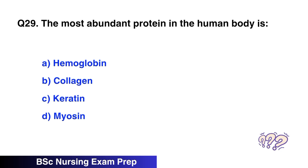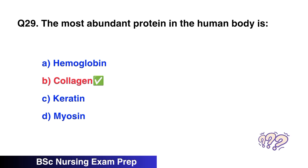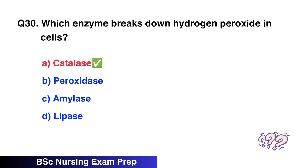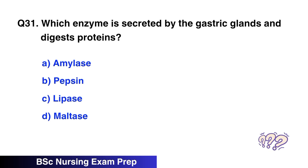Question 29. The most abundant protein in the human body is? The correct option is B, collagen. Question 30. Which enzyme breaks down hydrogen peroxide in cells? The correct option is A, catalase.